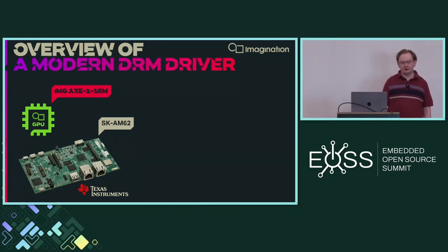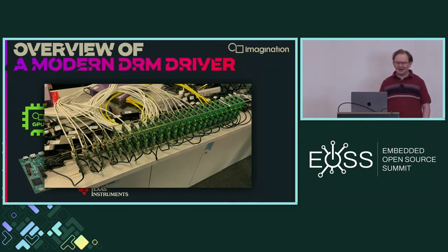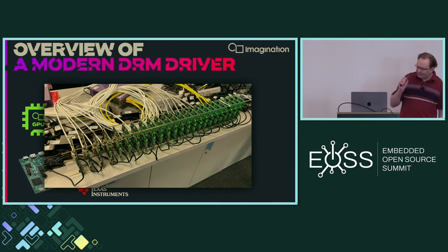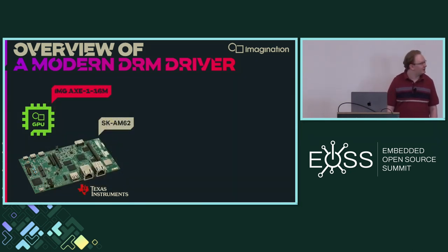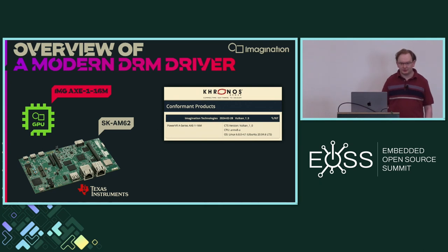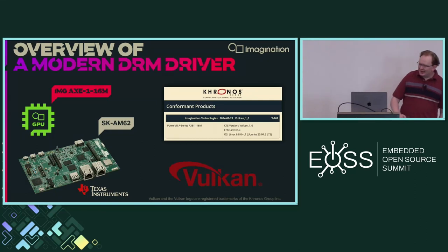The whole M62 family of SoCs uses the same GPU, but this dev board in particular is cheap and simple, and we have way too many of them now. That monstrosity does serve a real purpose — it's helped us run countless CTS iterations to achieve full conformance on that chip for Vulkan 1.0, which is very exciting. That's a huge step towards becoming a mature driver, and we can finally use the logo.